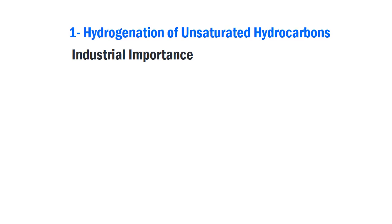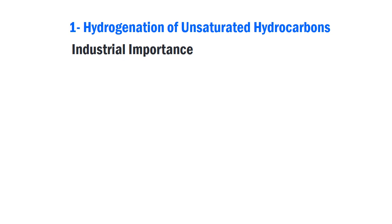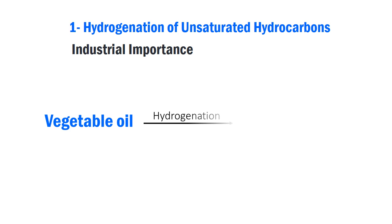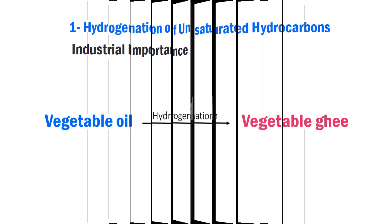This method is of industrial importance. The production of vegetable ghee by the catalytic hydrogenation of vegetable oil unsaturated fatty acids is an example of the application of this method on an industrial scale.